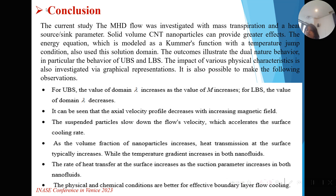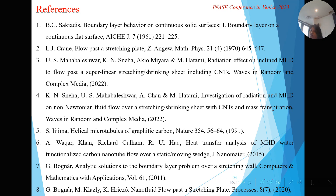In conclusion, we studied how carbon nanotubes work and elaborated on the upper branch and lower branch conditions when varying the magnetic parameter. Axial velocity decreases with increasing magnetic field. We compared how it affects the cooling rate, and when using carbon nanotubes and increasing the heat transmission surface, the temperature gradient also increases in both nanofluids. The heat transfer surface increases with the suction parameter in both carbon nanotube cases. The physical and chemical conditions provide better effective boundary flow of cooling.